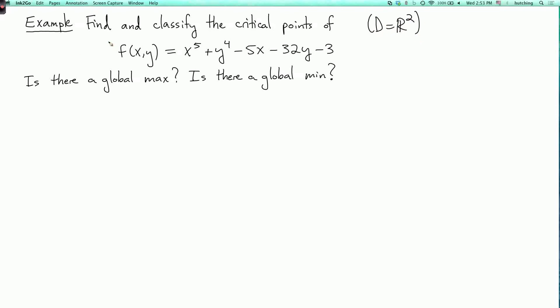So first we calculate the partial derivatives. fx equals 5x to the fourth minus 5 and fy equals 4y cubed minus 32.